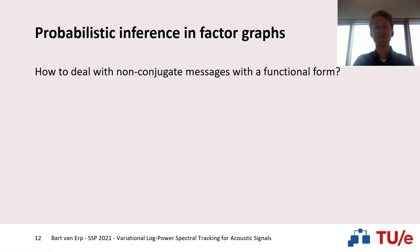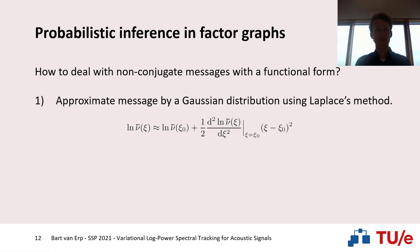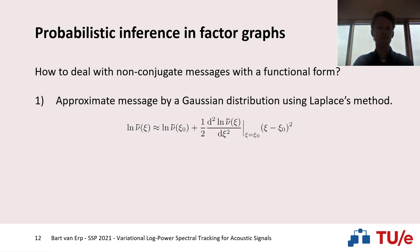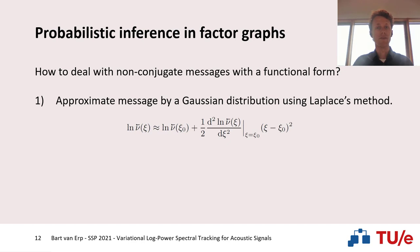We present three ways to deal with this problem. Our first approach is to approximate this message by a Gaussian distribution using Laplace's method. We directly approximate the message by expanding the function around its mode using a second-order Taylor expansion. Because we expand around the mode, the first-order derivative vanishes and we are only left with the second-order derivative. For some messages, we can find these modes and second derivatives analytically, and if not, we can resort to automatic differentiation.